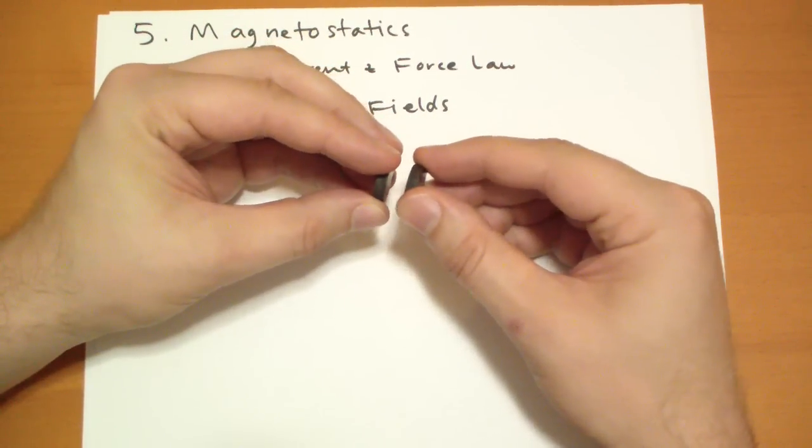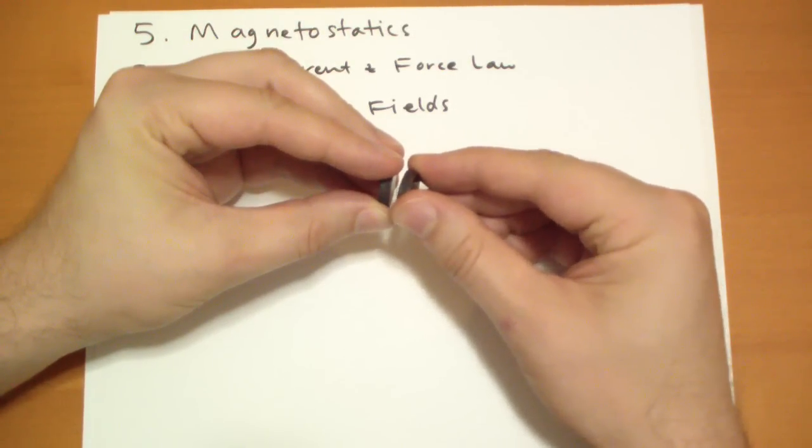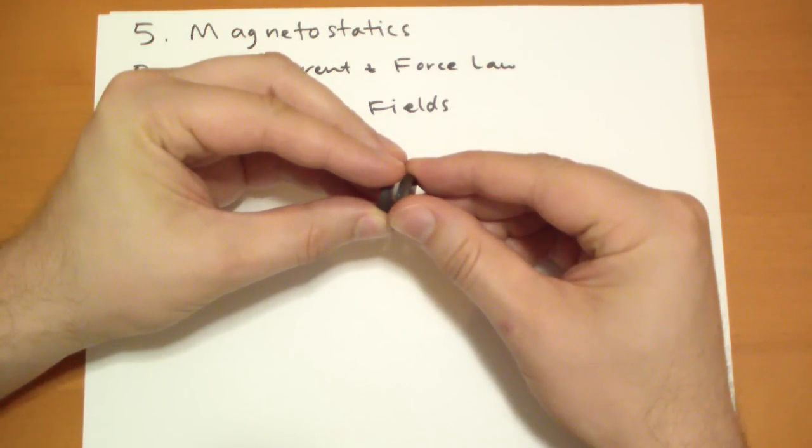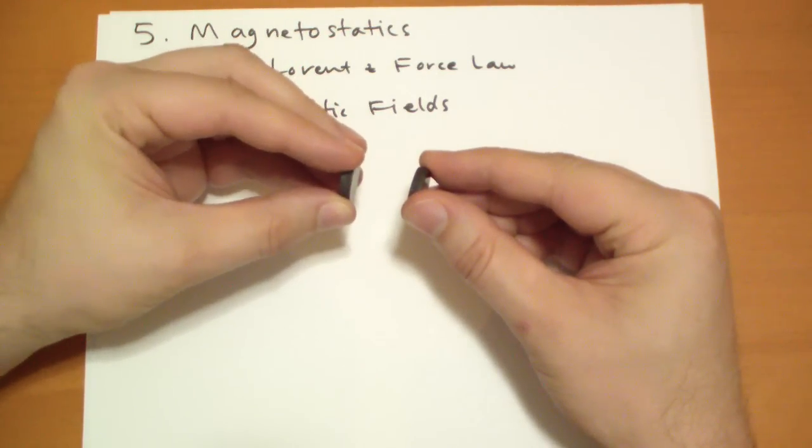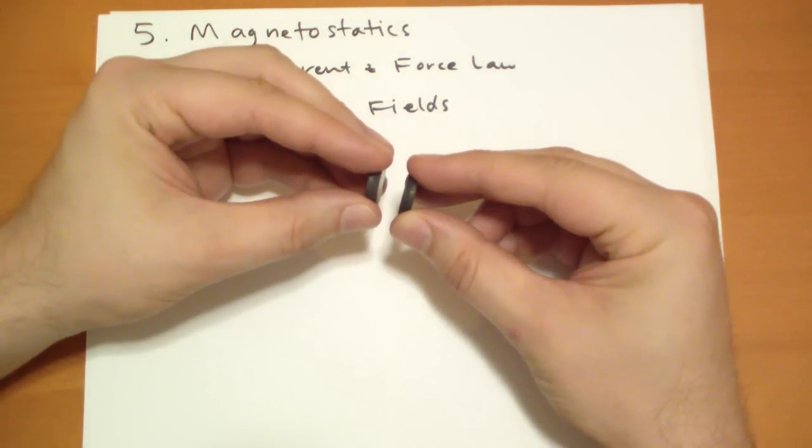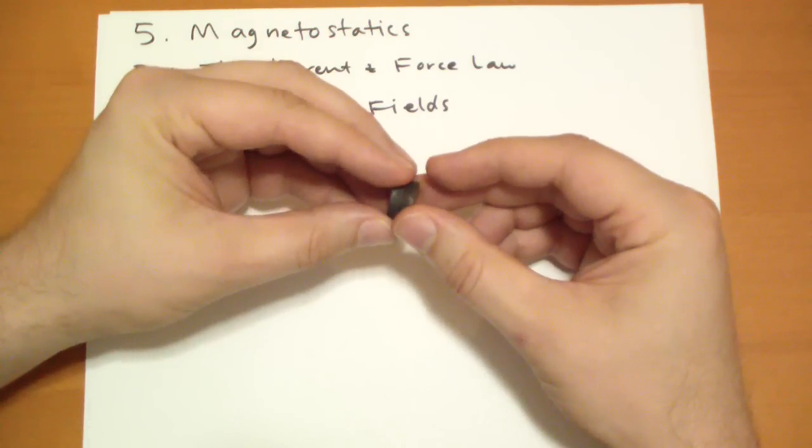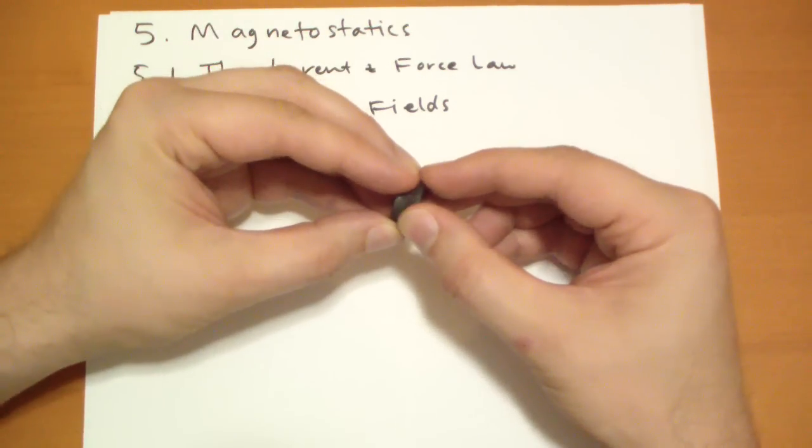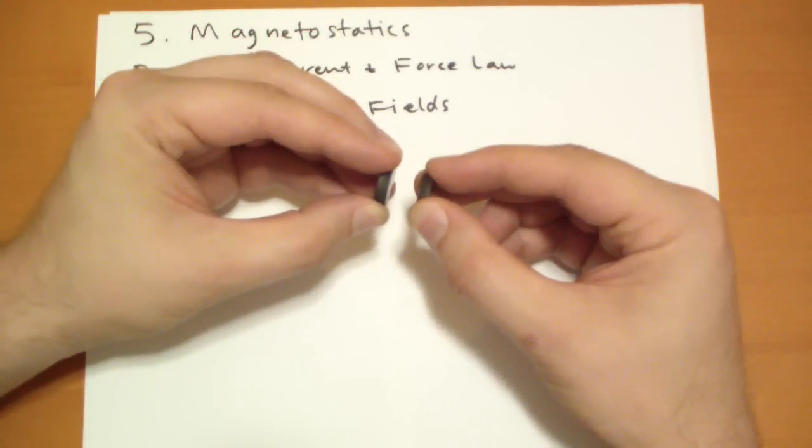They're kind of like electric charges, like they can repel. You can't really see the force, but there's a force there that's pushing against it, and the closer I get, the stronger it gets. You can kind of feel it, even from this kind of distance. But if you rotate it, then they attract. I didn't rotate it all the way there. So, they attract as well.